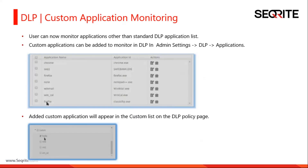In DLP we now have custom application monitoring. A user can add any custom application to the DLP application list and monitor data transfer across that application. To do this, go to admin settings, DLP applications, and add the required application. It will fall into the custom application category in the policy section where you can enable monitoring and apply the policy.